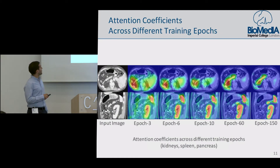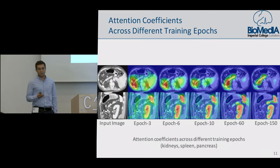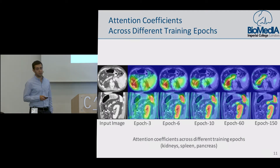I want to show you how attention coefficients evolve during our training iterations. We assume a uniform distribution across all the pixels initially, and then gradually we observe that attention coefficients basically focus on target organs — in our case, pancreas, spleen, and kidneys.